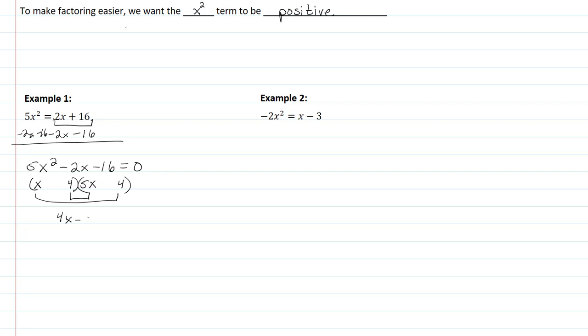The inside term would be 20x, and we'd be subtracting because our last term is negative. That's not going to give me -2x. That's way too big, so we need to try something else.